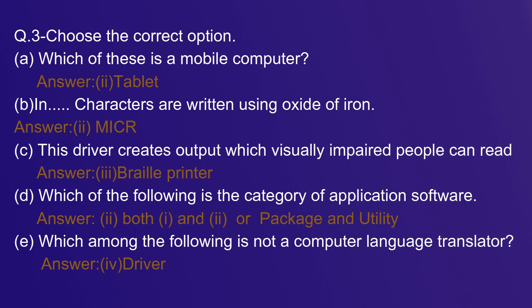D: Which of the following is the category of application software? Both. The answer is both one and two: utility and package.